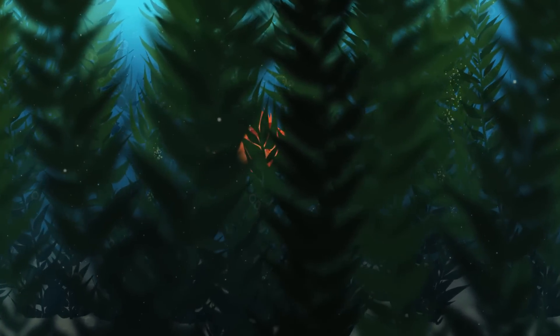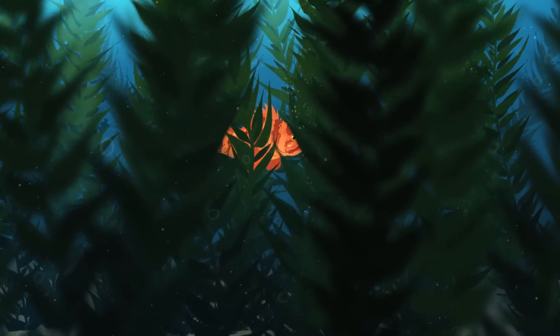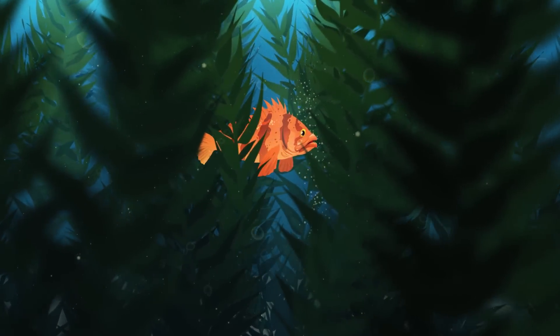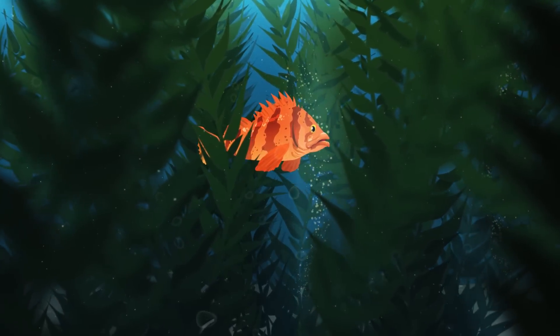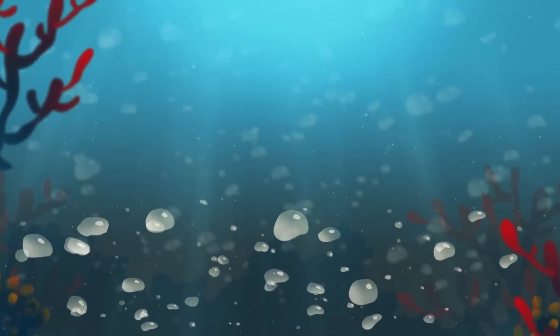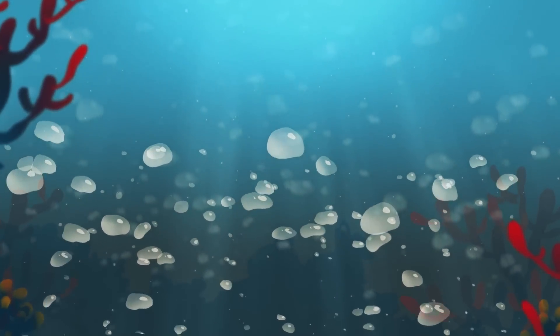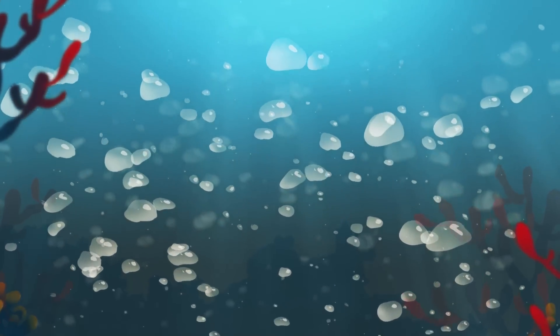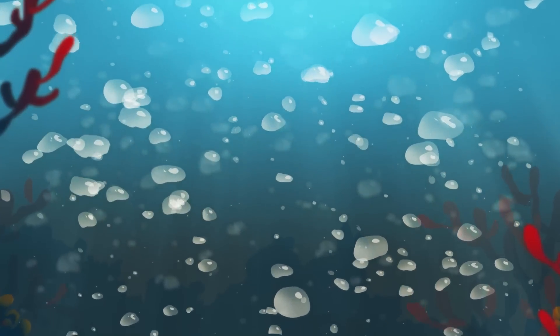The canopy of a giant kelp forest is rich in nutrients. The canopy feeds and shelters a myriad of organisms, like playful sea otters, colorful rockfish, and barking sea lions. But when the water becomes too warm or populations of herbivores grow too large, this prolific ecosystem can change rapidly.